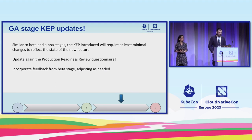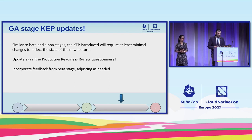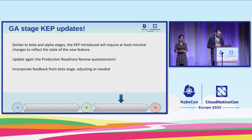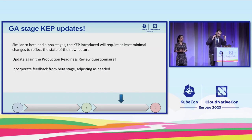When we change the maturity level of our feature, we update the KEP to reflect the latest version we changed our code on, and address the latest batch of production readiness review questions to make sure this is really stable and meets expectations. If there is any feedback to be incorporated or any changes to align with what happened so far, it's a great chance to make them.